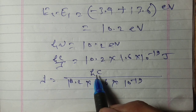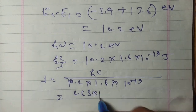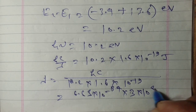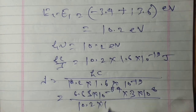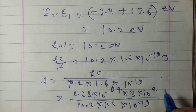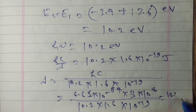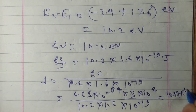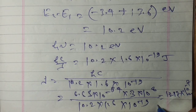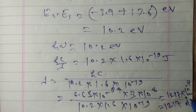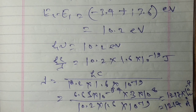Putting the value of Planck's constant h = 6.63×10⁻³⁴, speed of light 3×10⁸, upon 10.2 into 1.6×10⁻¹⁹. After calculating we get 1.217×10⁻⁷ meter, or equal to 1217 angstrom. So this is the answer: 1217 angstrom.